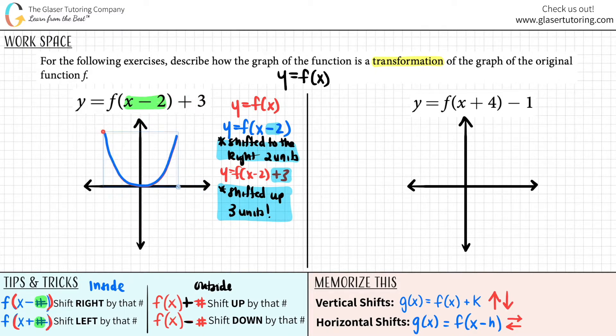So now here's my original function. I just need to shift over two units. One, two. And now what do I have to do? I have to go up three units. One, two, three. And there you go. This would be the old function and this is your new function. This is this function. That's it.